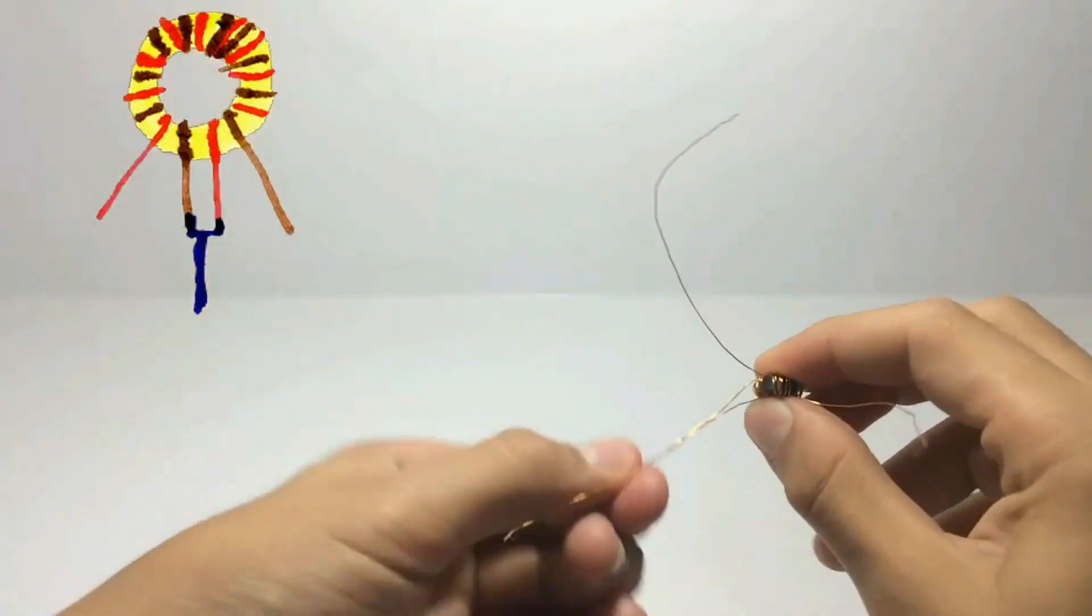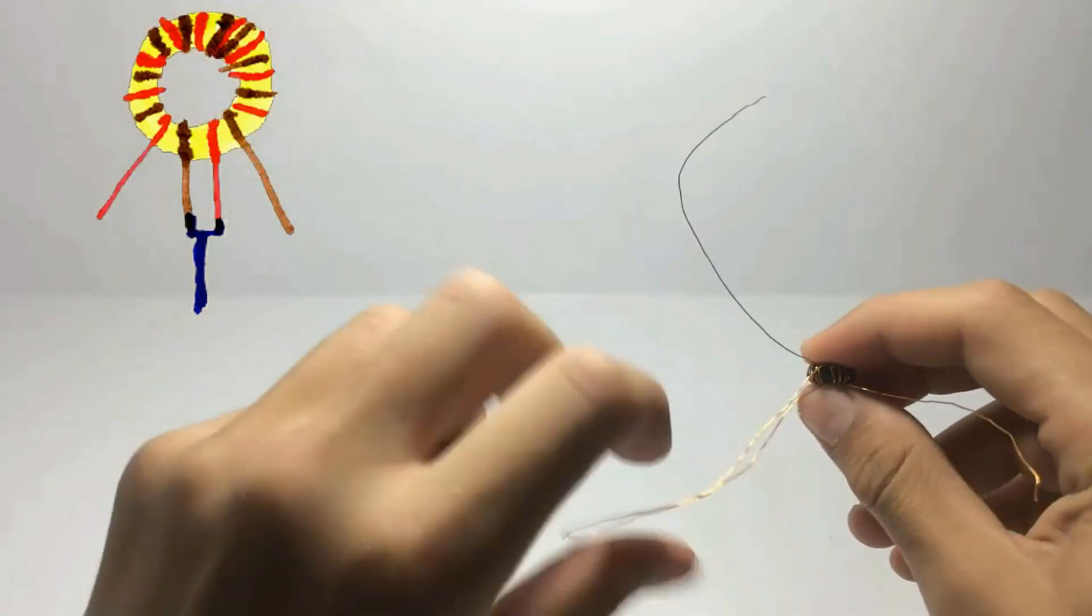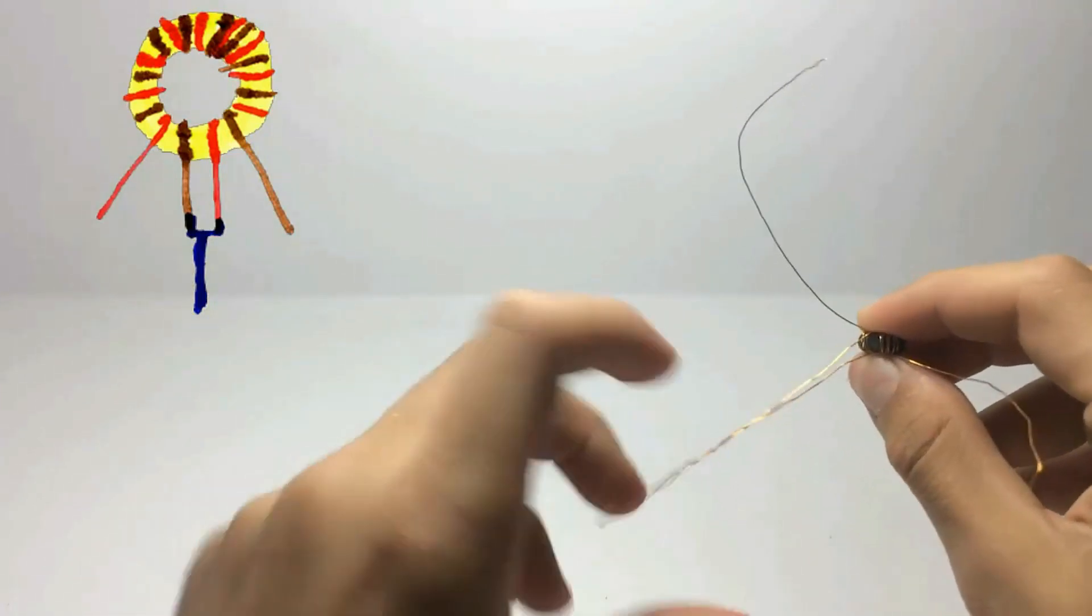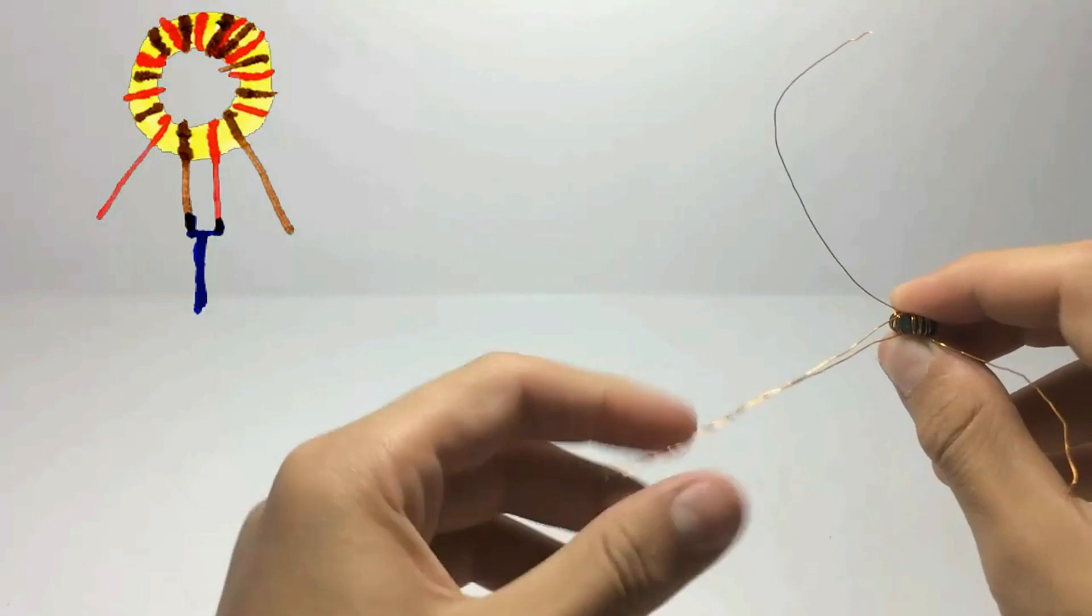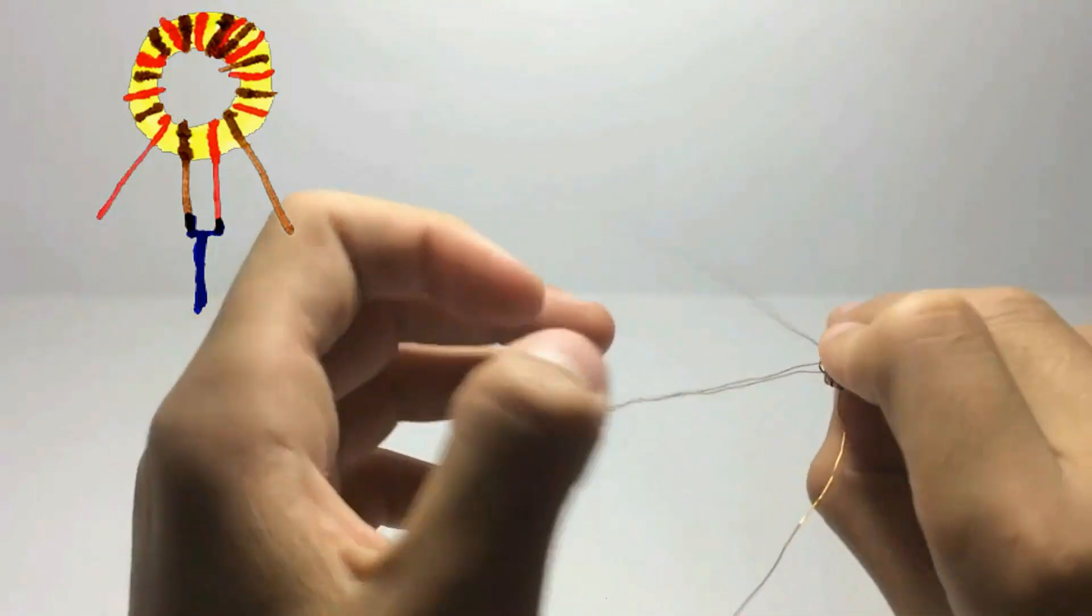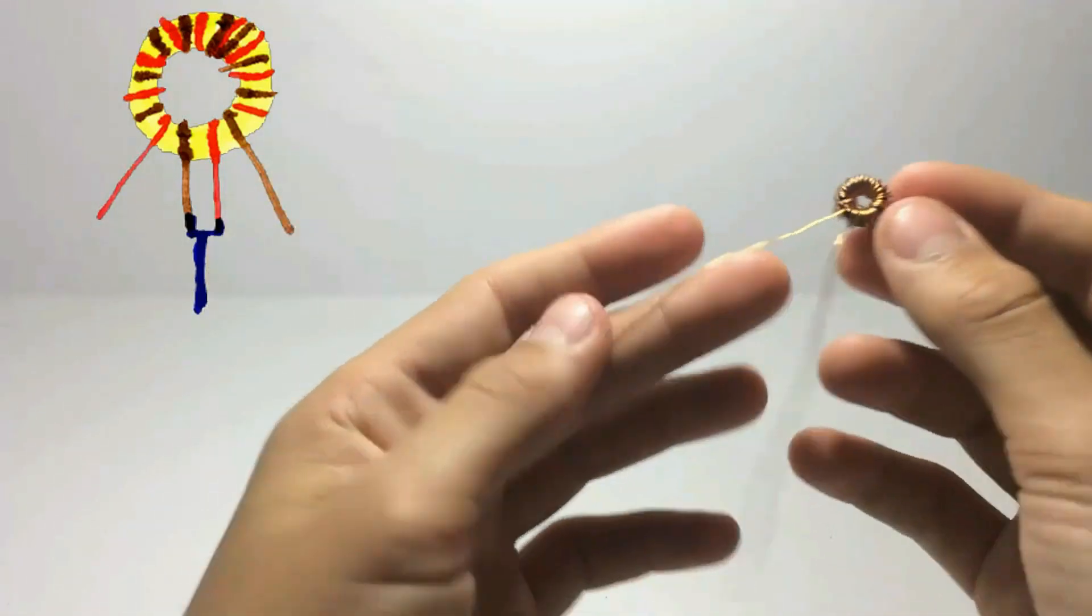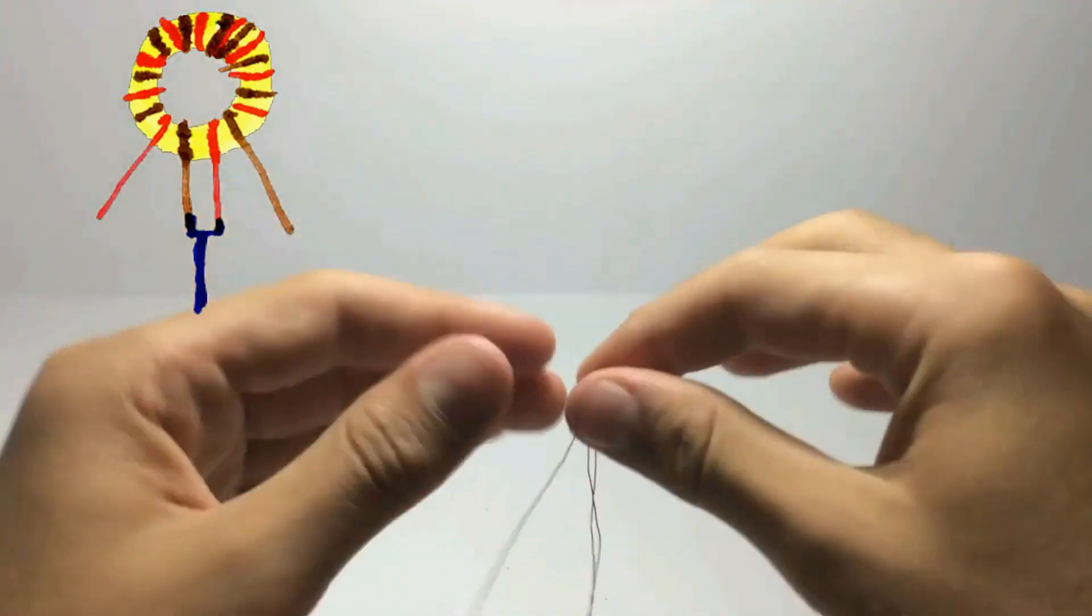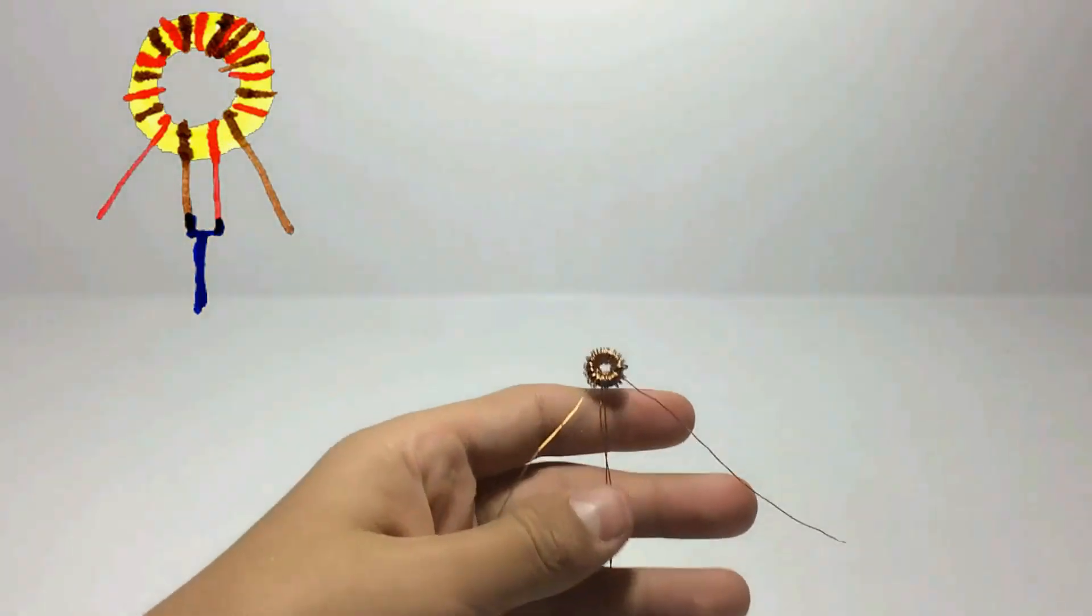And before you twist them together you need to strip the insulation, and honestly I stripped it before so it doesn't work. Now my ferrite coil is finished.